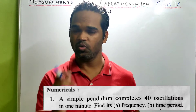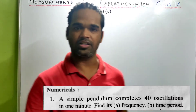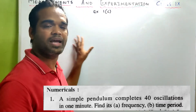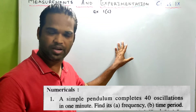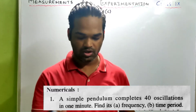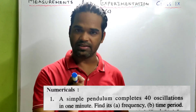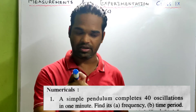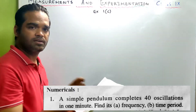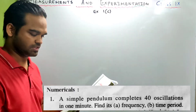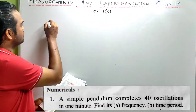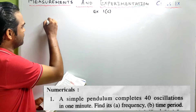Hi guys, we have already finished the theory portion of measurement and experimentation class 9 physics. Today we'll discuss the numericals from exercise 1C Concise Physics. Let's do the first sum.